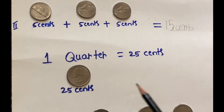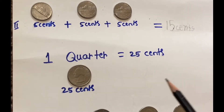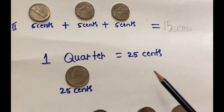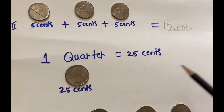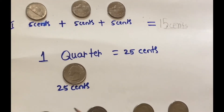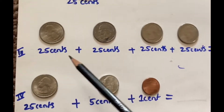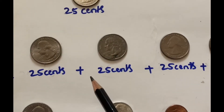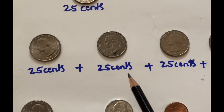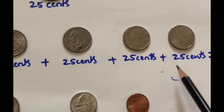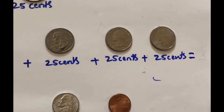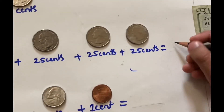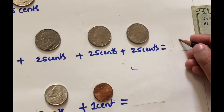One quarter equals twenty-five cents. Twenty-five cents plus twenty-five cents plus twenty-five cents plus twenty-five cents equals one dollar.